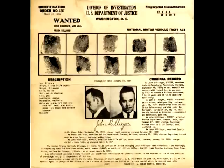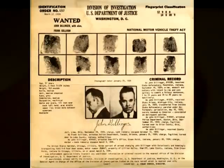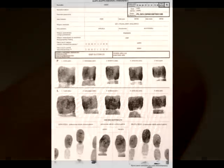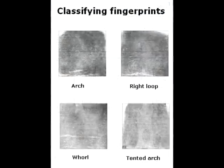Fingerprinting came into widespread use in the United States sometime around 1910. Today most law enforcement agencies have fingerprint labs, most states have identification agencies, and the FBI houses the largest collection of fingerprints in the world in its APHIS system.